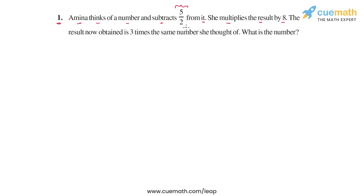So first, she thinks of a number and subtracts 5 by 2 from that number. Then she multiplies the result by 8. The result now obtained is 3 times the same number she thought of. What is that number?